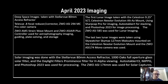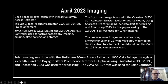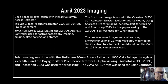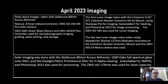Deep space images as well as some solar imaging were done with the Stellarview 80mm Radian refractor. The deep space image train also consisted of the Televue 0.8 focal reducer, the ZWO ASI 294 Color Pro camera, mounted on the ZWO AM5 strain wave mount, and ZWO ASI Air Plus controller, which managed all the astrophotography imaging, guiding, plate solving, and storage of all the images.